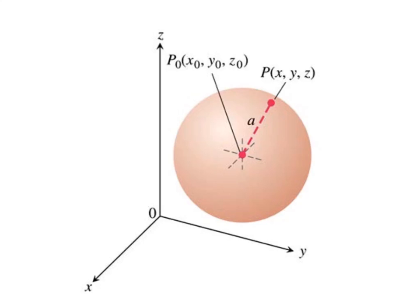A sphere in space is the set of all points that are equidistant to some center point. If we call the center point P naught — that is (X₀, Y₀, Z₀) — then any point that is a distance A away from that center point is a point on the sphere. So point P = (X, Y, Z) is on the sphere if the distance from P₀ to P equals A.